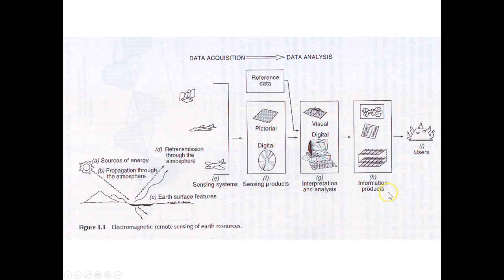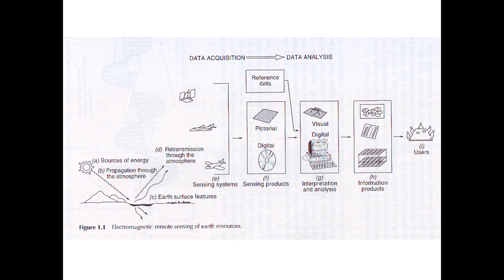This is where we start at the sun and end up with decision makers or people working to understand what's happening — a linear process starting with energy from the sun and ending with information products we've produced as remote sensors. Start taking a look at your material. Remember there is an activity we're starting on here at the beginning of the course — you'll find that in the activities. Looking forward to a great term with everyone.